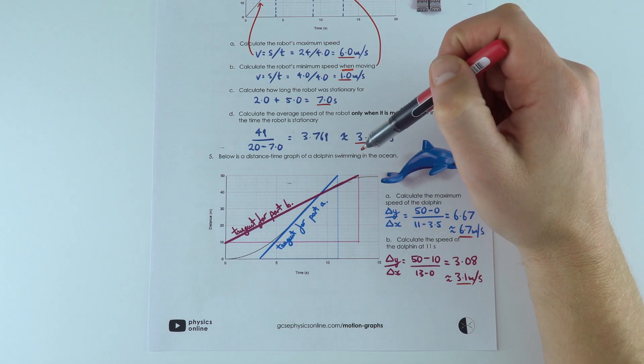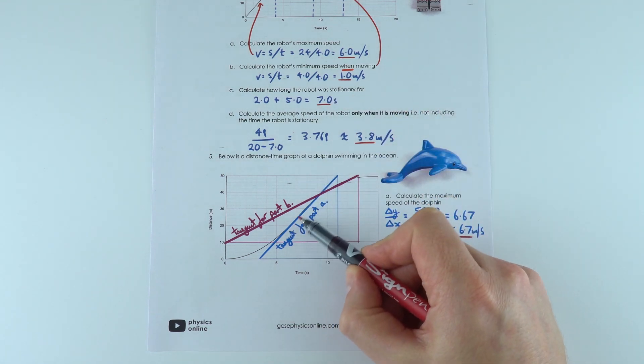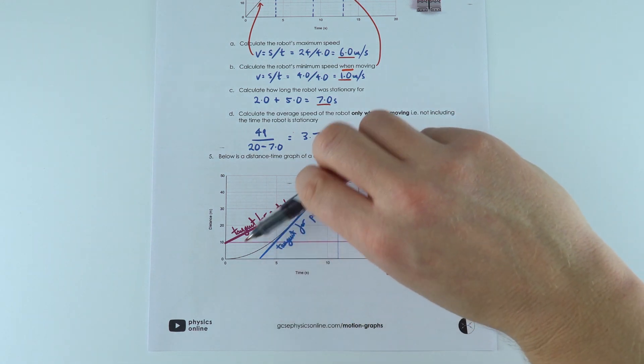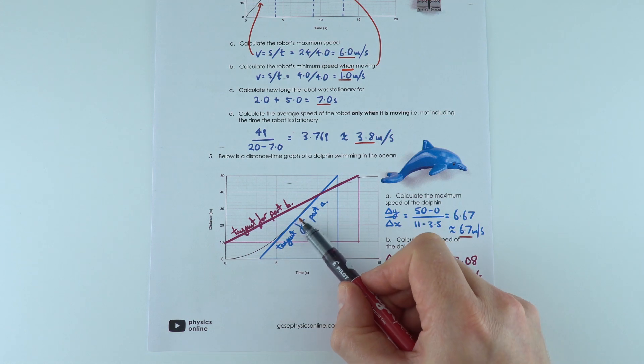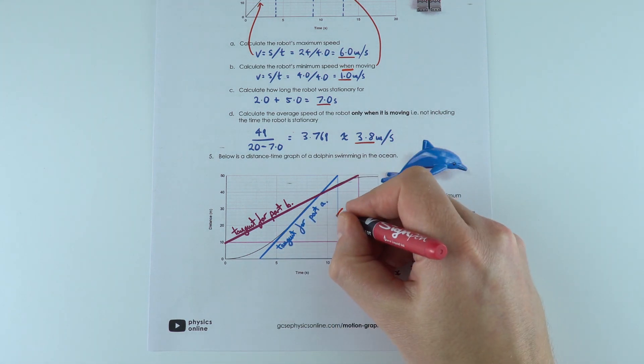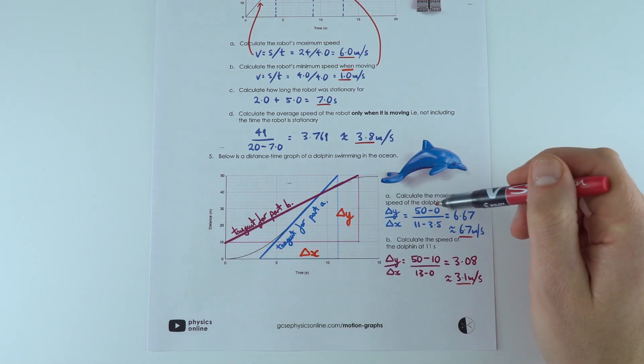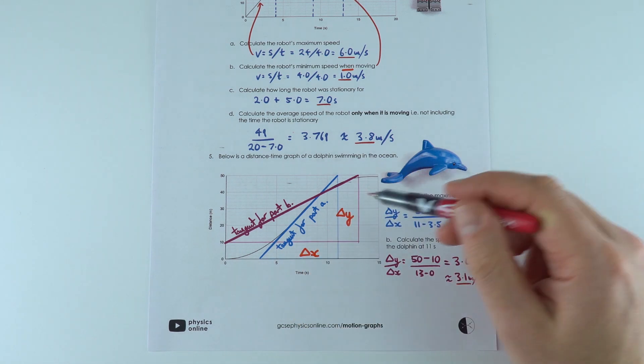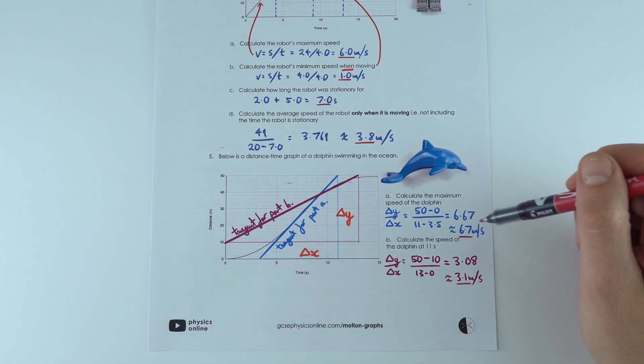The maximum speed was equal to the maximum gradient. All I did was I put my line and I kind of judged it by eye on the curve, and I thought at this point here, the gradient is our change in y value divided by change in x, which is equal to 50 take away 0 divided by 11 take away 3.5 to give a value about 6.7 meters per second.